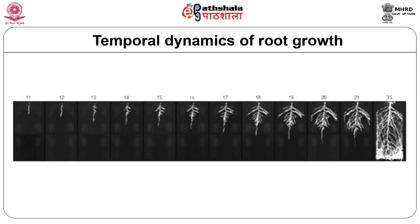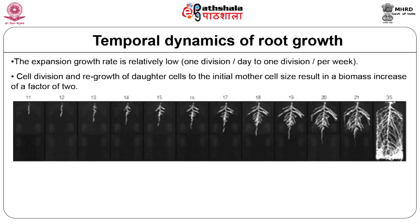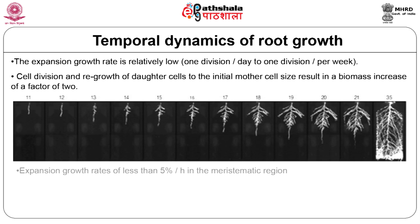Dynamics of root growth are largely dependent on spatial zonation seen from the apex to base of a root. In the root meristem, situated at the tip of the root, expansion growth rate is relatively low as repetitive cell divisions take place at rates ranging from one division per day to one per week. Cell division and regrowth of daughter cells to the initial mother cell size results in a biomass increase by a factor of 2.